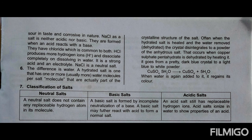Question number 7 asks about neutral salt, basic salt, and acidic salt. A neutral salt is formed when there is complete neutralization — acid completely reacts with base and the resulting salt has neither acidic nor basic properties. A basic salt is formed when there is incomplete neutralization, and the salt retains basic properties and can further react with a normal salt.